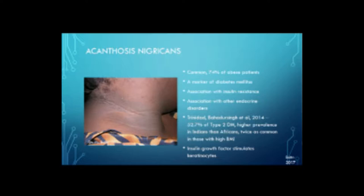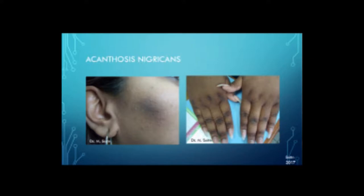Starting with acanthosis nigricans, which everybody knows by now — it's common, seen in 74% of obese patients, a mark of diabetes mellitus, associated with insulin resistance and other endocrine disorders. In Trinidad, Bahadur Singh et al. showed it occurs in 52.7% of type 2 diabetics. The highest prevalence was in Indians versus Africans, and it's twice as common in those with a high BMI. It is thought to be due to insulin growth factors stimulating the keratinocytes. Many people get these lesions on the face, mistaking them for melasma, but they're actually acanthosis nigricans. You can also get it over the knuckles of the hands and feet.